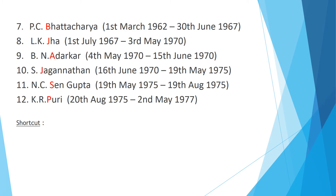The seventh RBI governor is P.C. Bhattacharya. After him, L.K. Jha became the RBI governor. After L.K. Jha, B.N. Adharkar was appointed as RBI governor. The tenth RBI governor is S. Jagannathan, and the eleventh RBI governor is N.C. Sen Gupta.